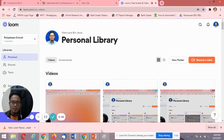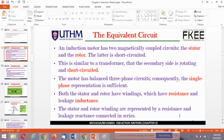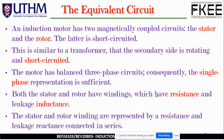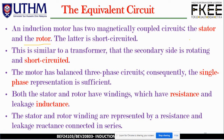Assalamualaikum warahmatullahi wabarakatuh, and welcome back. Now let us continue with the equivalent circuit of the induction motor. An induction motor has two magnetically coupled circuits, namely the stator and the rotor, whereby the latter is short-circuited at the ends. This is similar to a transformer where the secondary side is rotating and short-circuited. What makes the induction motor different from a transformer is that the secondary side is rotating and short-circuited.